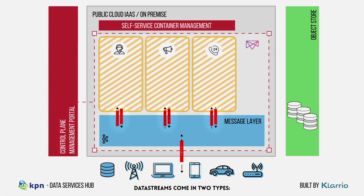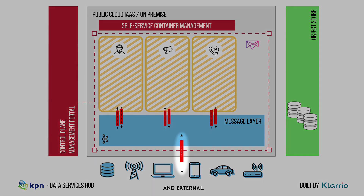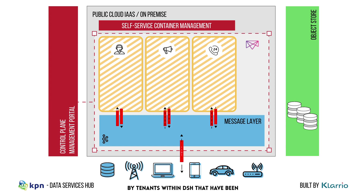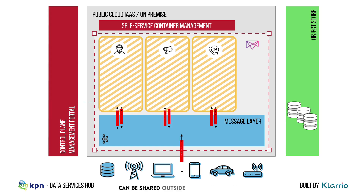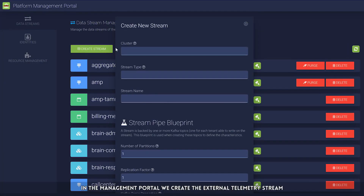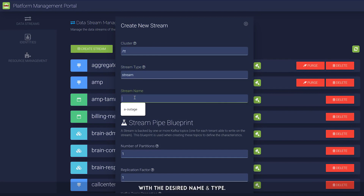Data streams come in two types: internal and external. Internal data streams are Kafka only — they can only be read from or written to by tenants within the DSH that have been explicitly given permission to do so. External streams, on the other hand, can be shared outside the DSH over MQTT. In the management portal, we create the external telemetry stream with the desired name and type.